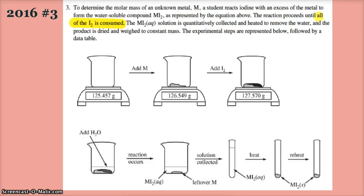All right, here we're going to look at some parts of question number three from the 2016 exam. It says to determine the molar mass of an unknown metal M, a student reacts iodine with an excess of the metal.